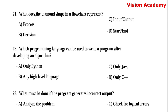Question number 21: What does the diamond shape in a flowchart represent? Option A, process. Option B, decision. Option C, input/output. Option D, start/end. Here, option B, decision, is the right answer. The diamond shape is also called a rhombus, which is used for decision making purposes.